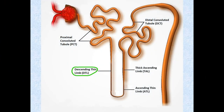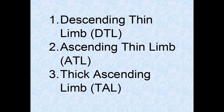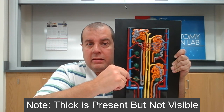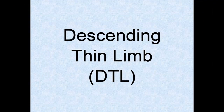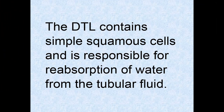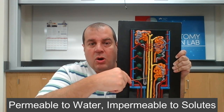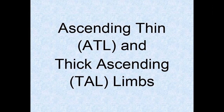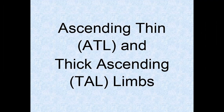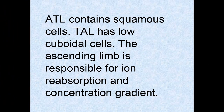From the PCT, filtrate goes down the descending loop of Henle — also called the nephron loop. There are three parts: the descending thin limb (DTL), the ascending thin limb (ATL), and the thick ascending limb (TAL). The DTL contains simple squamous cells and is responsible for reabsorption of water from the tubular fluid; it is permeable to water. The ascending loop of Henle is permeable to solutes but not water. The ATL contains squamous cells while the TAL has low cuboidal cells; the ascending limb is responsible for ion reabsorption and establishing the concentration gradient.